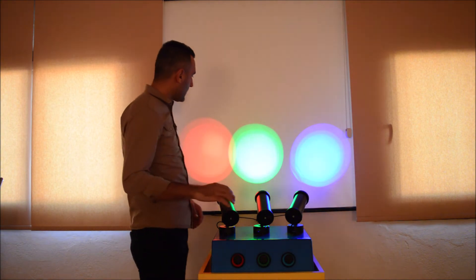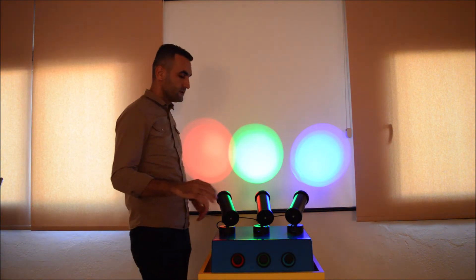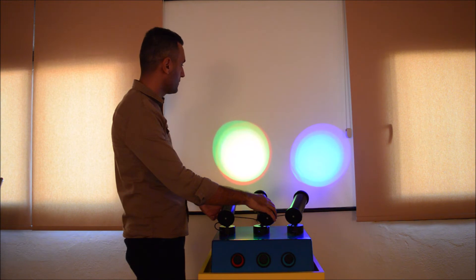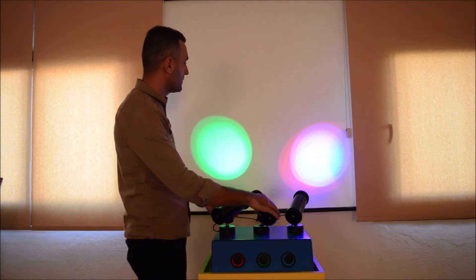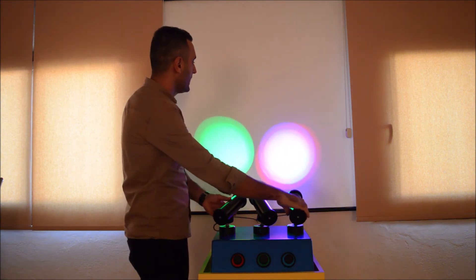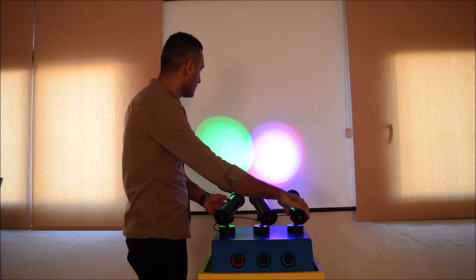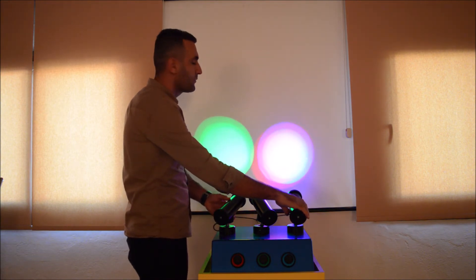If you overlap red and green, you get yellow. But if you overlap red and blue, you get purple.